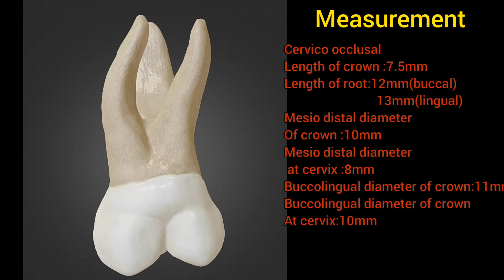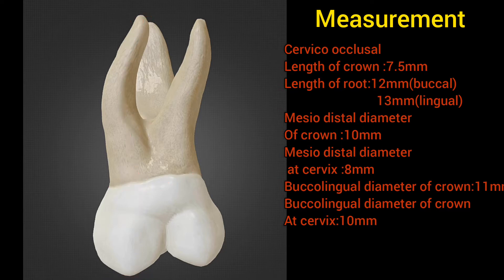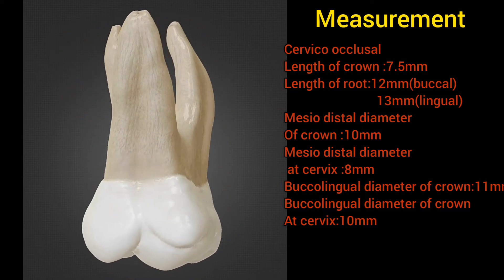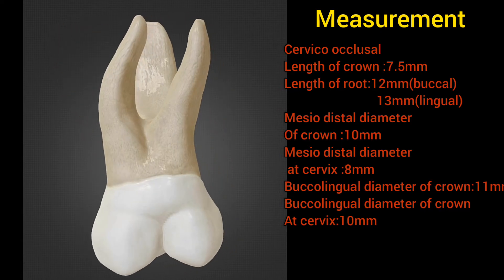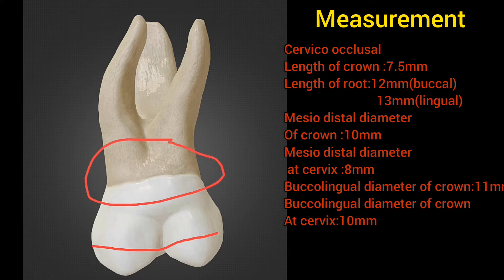Now let's see the dimensions. The cervico-occlusal length of the crown is 7.5 mm. The length of the root on the buccal side is 12 mm, while on the lingual side it is 13 mm. The mesiodistal diameter of the crown is 10 mm, while the mesiodistal diameter at the cervix is 8 mm.